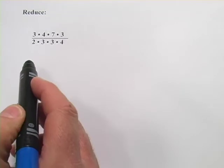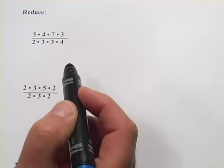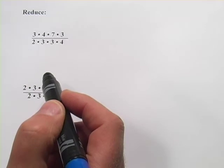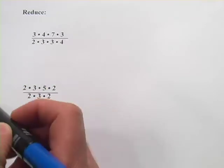And when you have everything on the top multiplied and everything on the bottom multiplied, you can do this really fun, neat thing called canceling. Anytime you see the same number on the top and on the bottom, you can get rid of it.